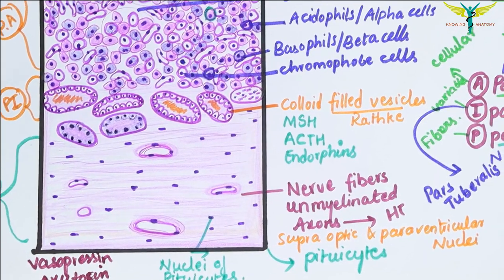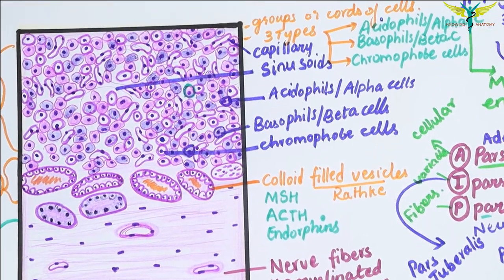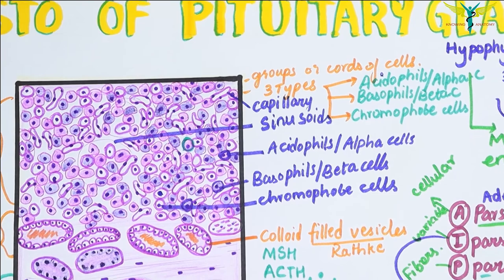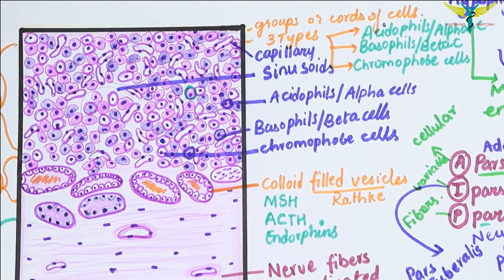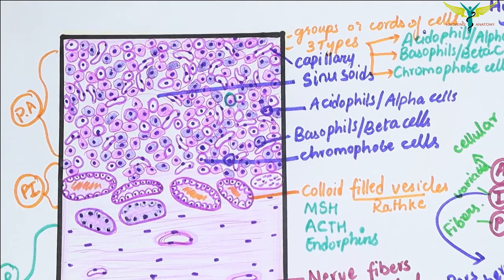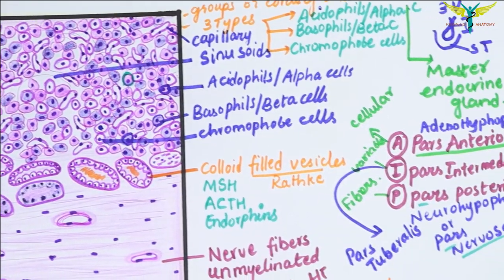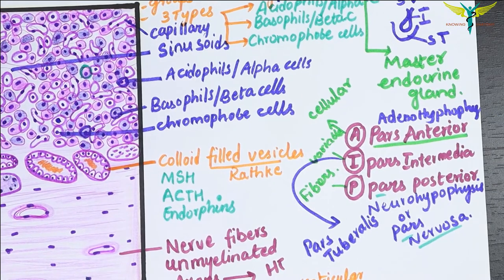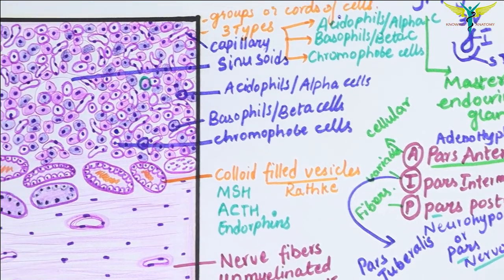Remember, the pars posterior or neurohypophysis releases two hormones into the blood: vasopressin and oxytocin. That's all about the histology of the pituitary gland. If you like this video, please subscribe to my channel, and if you want a separate video on the pars anterior, you can write in the comments below.